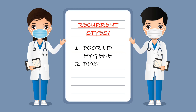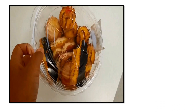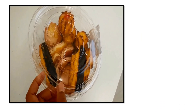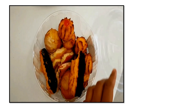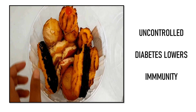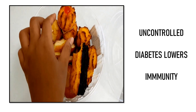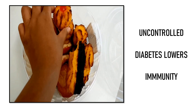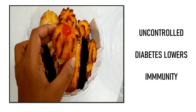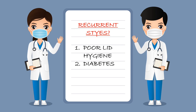The second reason you might get recurrent styes is diabetes. Diabetes is a disease that affects virtually every organ of your body. Uncontrolled high blood sugar lowers your immunity and increases your chances of getting a bacterial infection. So if you are an adult getting recurrent styes, your doctor will ask you to get your blood sugar levels checked, and if your blood sugar is high, your doctor will ask you to control it.